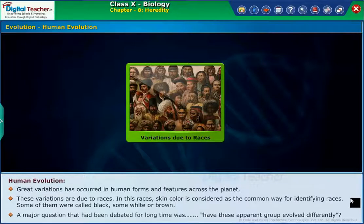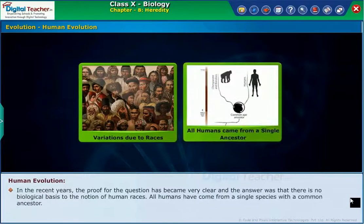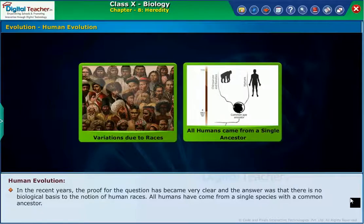Amazingly, the question that had been debated for a long time was: have these apparent groups evolved differently? In recent years, the proof for the question has become very clear, and the answer was that there is no biological basis to the notion of human races.